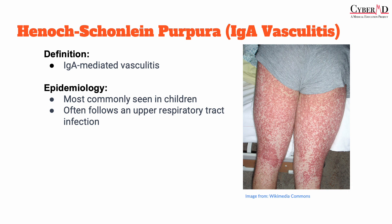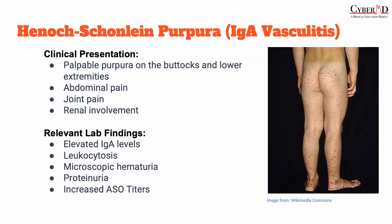HSP is more common in children, with 90% of cases occurring in patients under the age of 10. It's more common in males than in females, and the peak incidence is around 6 years old. The onset of HSP is typically 1–3 weeks after an infection, most commonly an upper respiratory tract infection, which is going to be caused by something like group A streptococcus.